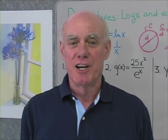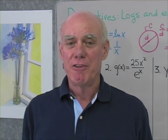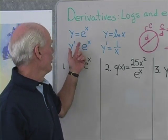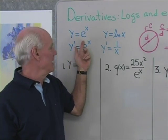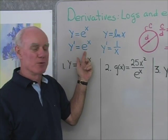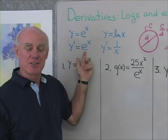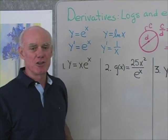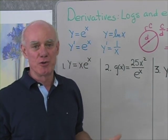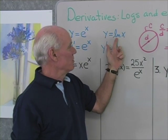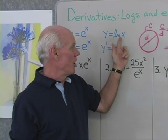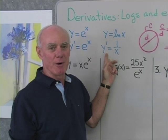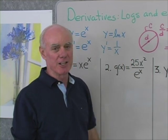Let's look at some derivatives of logarithmic functions and exponential functions. If y is equal to e to the x, then the derivative of y with respect to x is also e to the x. e to the x is the only function that's its own derivative. If y is equal to the natural logarithm of x, then the derivative of y with respect to x is 1 over x.